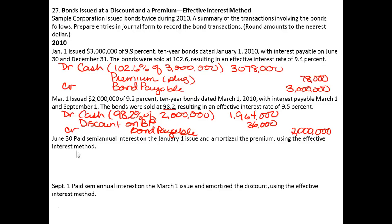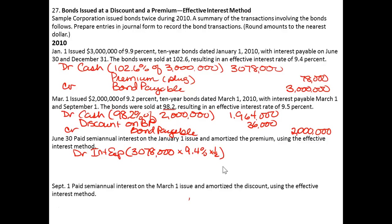Now on June 30th, we're going to pay interest on that first bond and amortize the premium. So we're going to debit interest expense for the carrying value of $3,078,000 times the effective rate of 9.4%, and it's a semi-annual bond, so half a year. The debit to interest expense is going to be for $144,666, rounded to the nearest dollar.